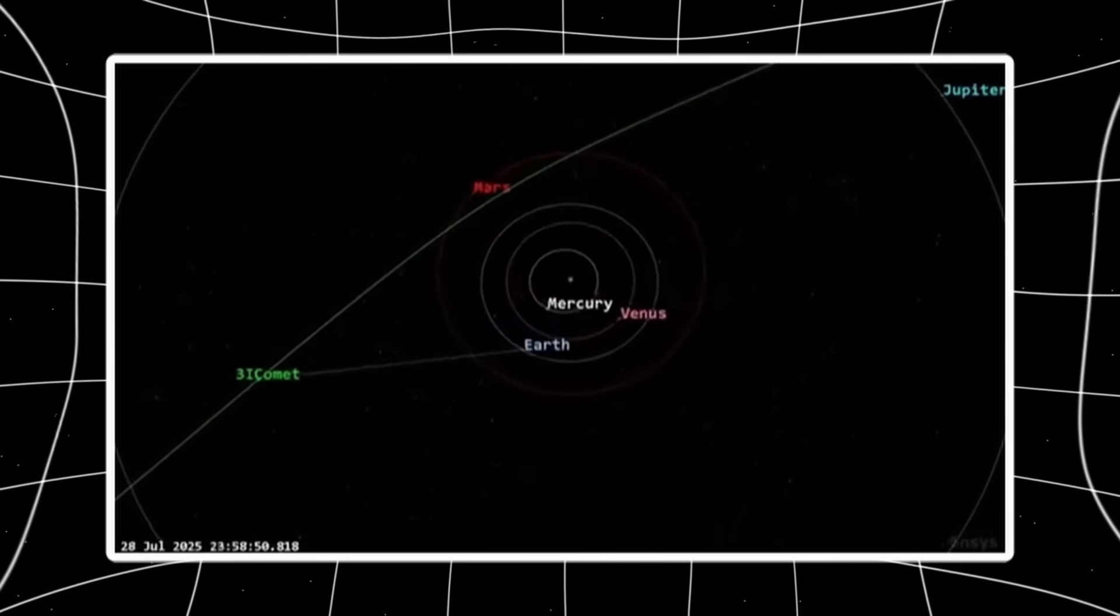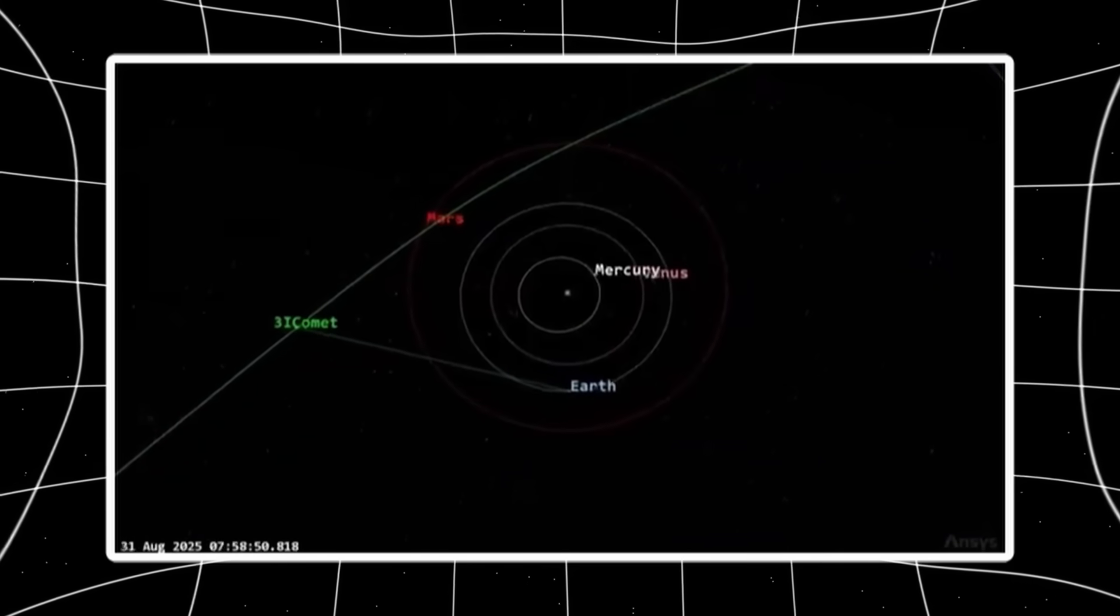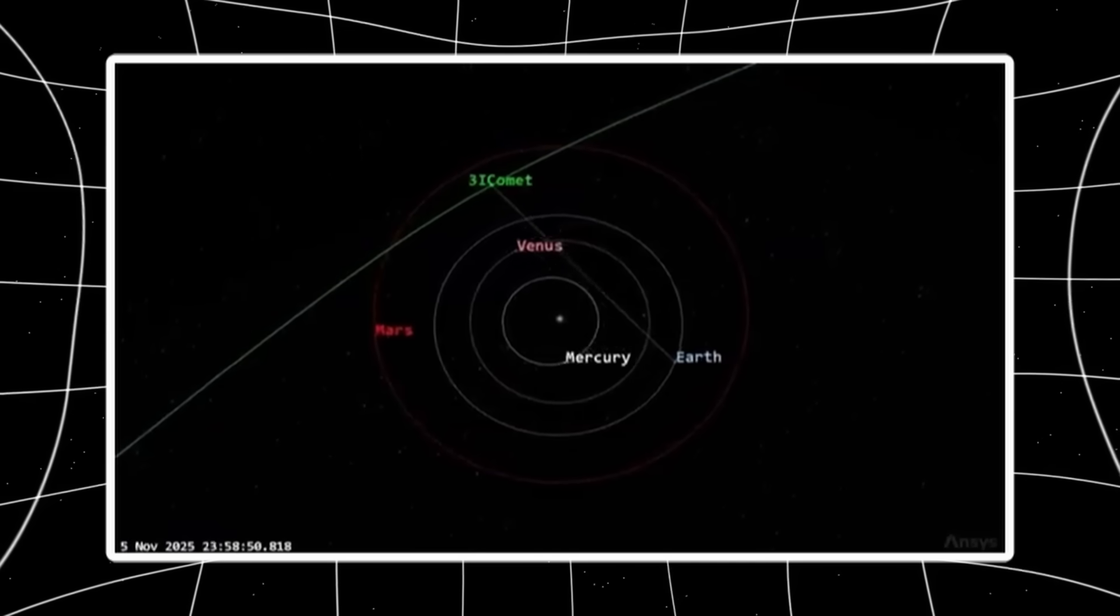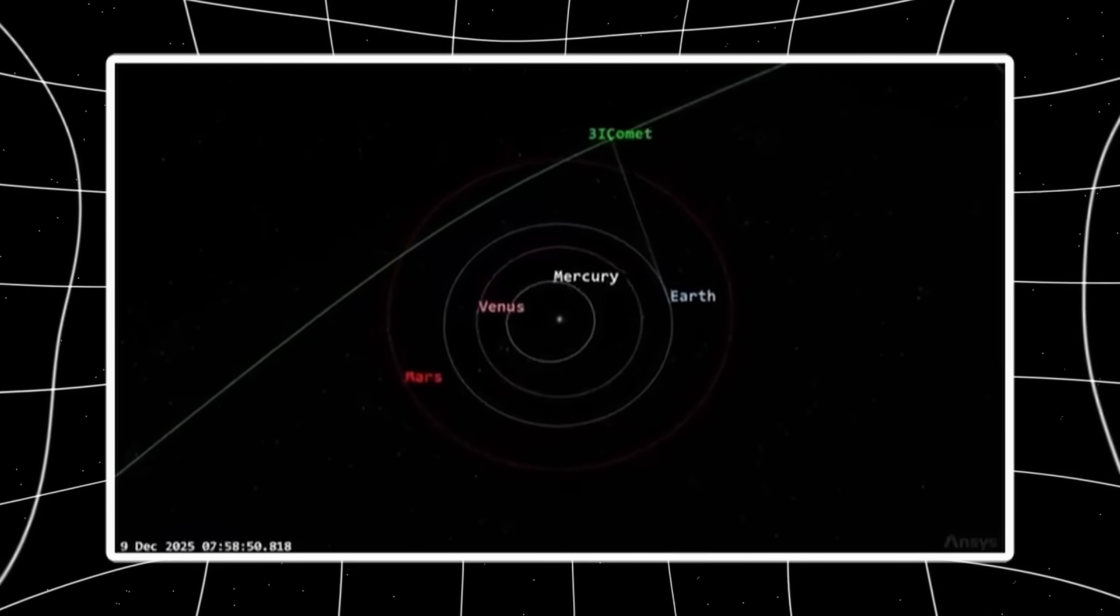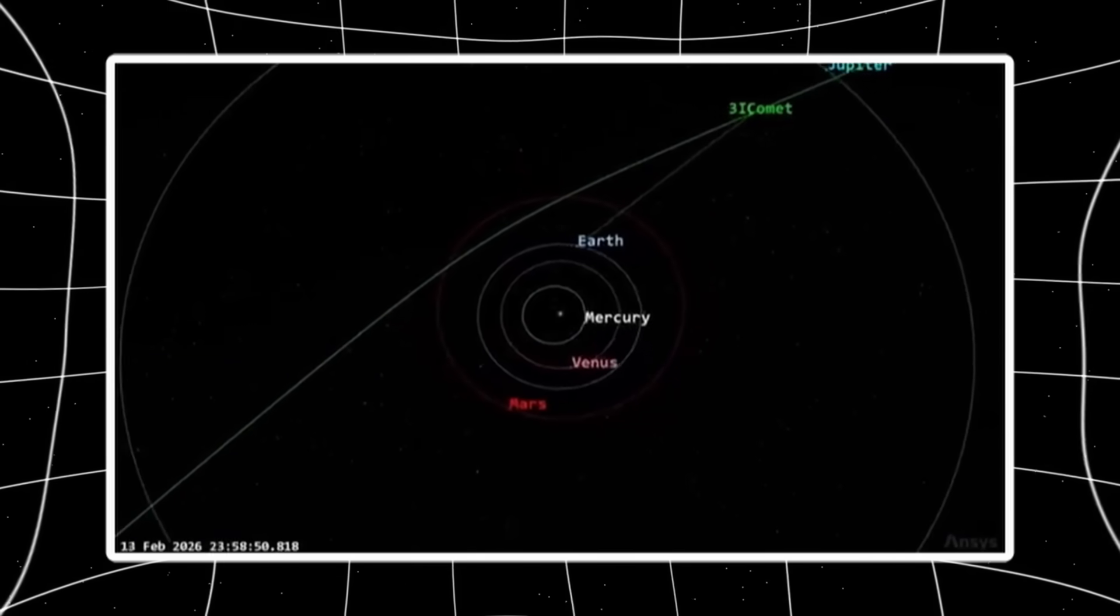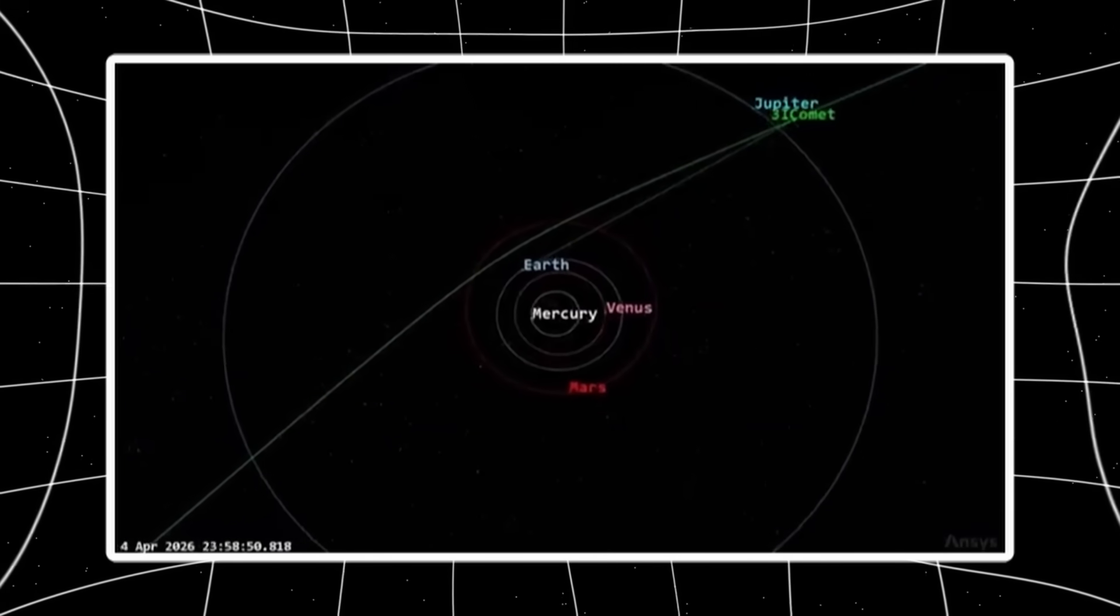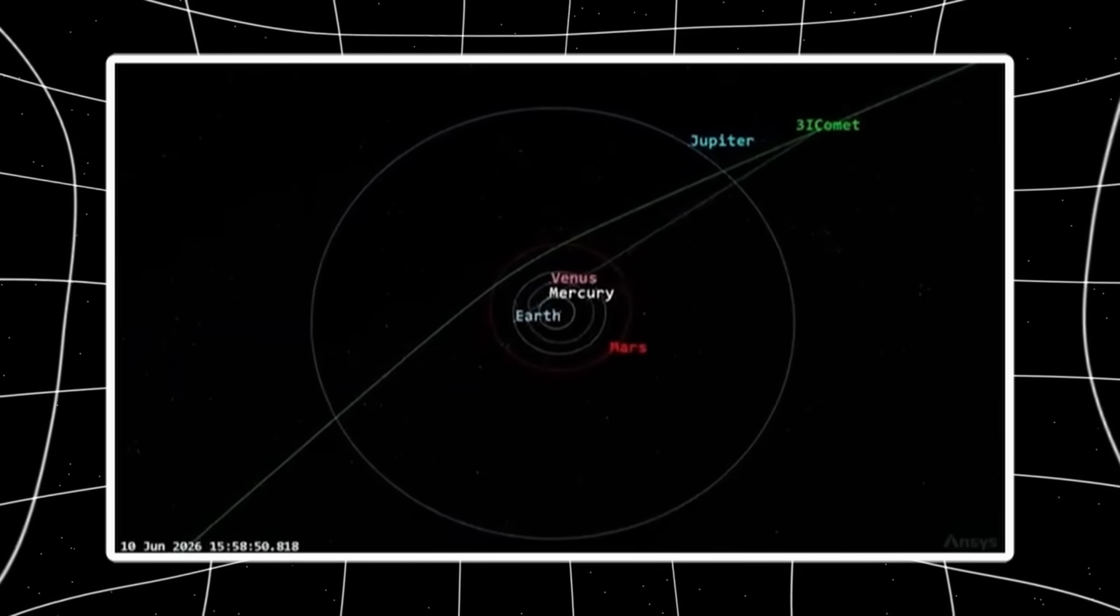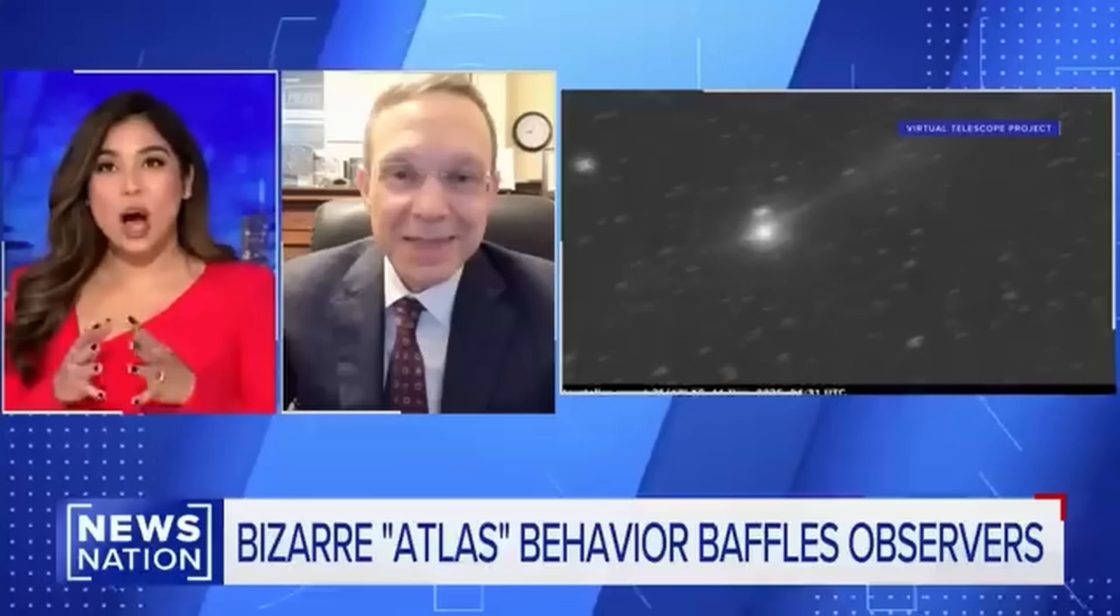Here's the comparison. Imagine throwing a dart while blindfolded from one continent and hitting a bullseye on another. Now imagine the dart self-corrects mid-flight to compensate for wind, gravity, and atmospheric drag, all without guidance systems. That's the level of precision Atlas is demonstrating. Natural processes don't produce this kind of accuracy across interstellar distances.